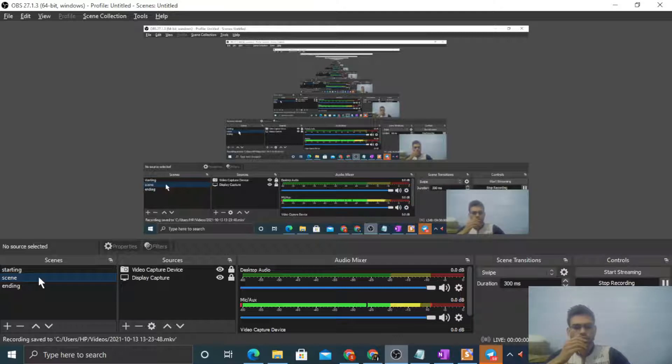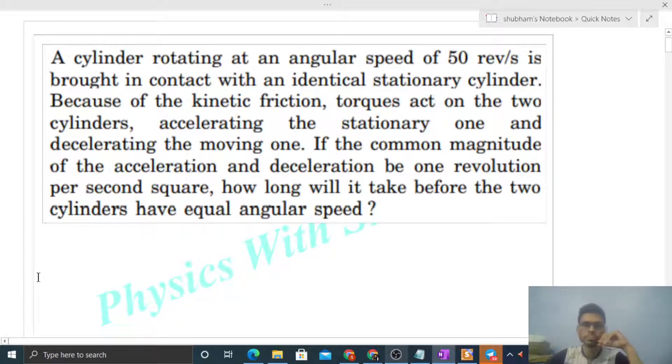Okay, hi everyone. Today let's discuss this interesting problem. A cylinder rotating at an angular speed of 50 revolutions per second is brought in contact with an identical stationary cylinder. Because of the kinetic friction, torque acts on the two cylinders, accelerating the stationary one and decelerating the moving one. If the common magnitude of the acceleration and deceleration is one revolution per second square, how long will it take before the two cylinders have equal angular speed?